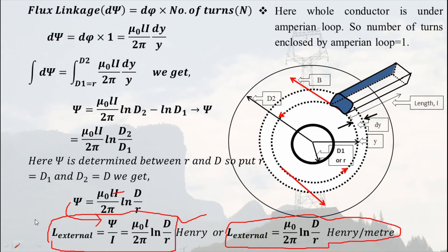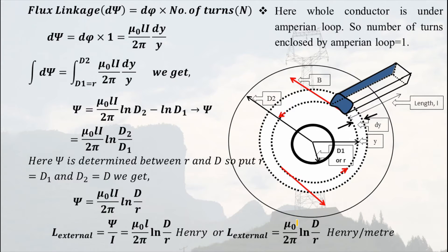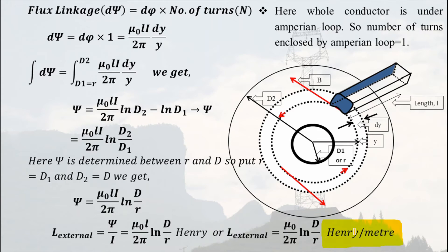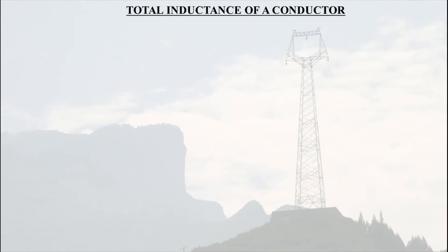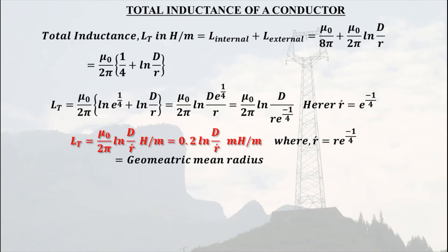You may ask why we express external inductance in henry per meter. The answer is that in a transmission line, inductance is not accumulated at a point — it is spread over the entire length of the transmission line because it is a distributed parameter. For distributed parameters it is convenient to take values per unit length, which is why external inductance is expressed in henry per meter.